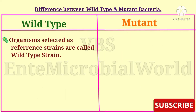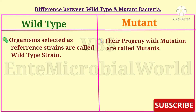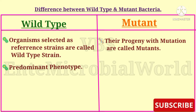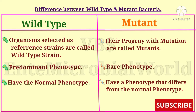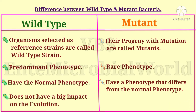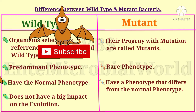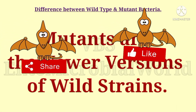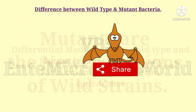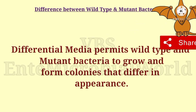Organisms selected as reference strains are called wild type, and their progeny with mutations are called mutants. The wild type is the predominant phenotype; the mutant is the rare phenotype. Wild type has the normal phenotype, while mutants have a phenotype that differs from the normal phenotype. Wild type does not have a big impact on evolution, whereas mutants play an important role in evolution — mutants are the newer versions of wild strains.